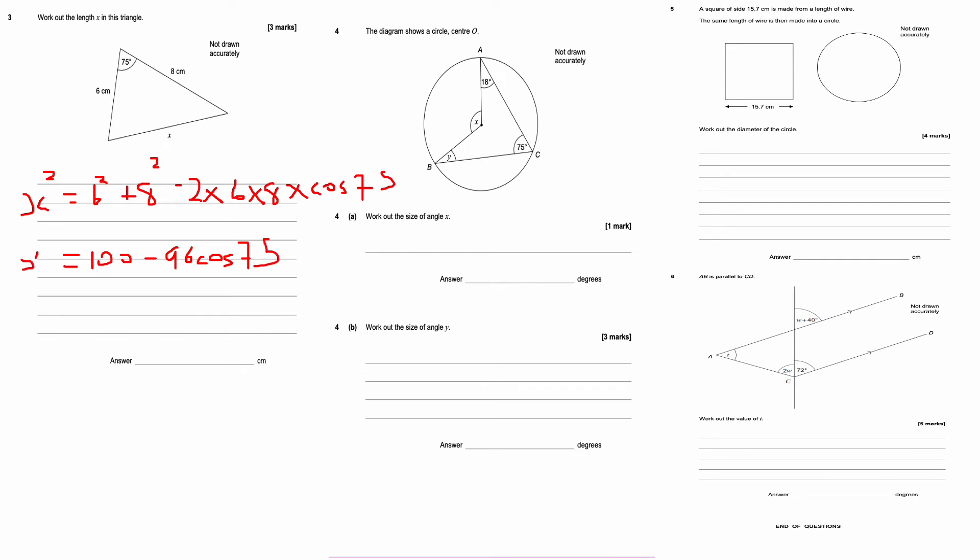And then x will be equal to the square root of that. So x is, I'm just going to be a bit lazy here and just write the square root of ans, because once you tap that into your calculator, you will just click square root and then you click answer, which is the previous part to this, and then it will give you your answer. So I'm going to type in first of all 100 take away 96 cos 75, and then I'm going to press equals, then I'm going to press square root answer, and I get the answer of 8.67 centimeters to 2 decimal places.